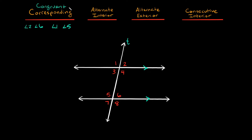The reason it's useful knowing these is because corresponding angles are congruent — congruent just means they have the same angle. So for example, if angle two over here was 69 degrees, then that means angle six over here is also 69 degrees. If angle one over here is 111 degrees, then that means angle five down here is also 111 degrees. So those are corresponding angles, just angles in similar positions.